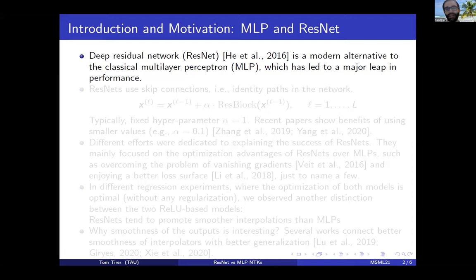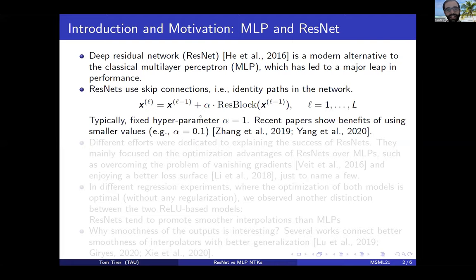My name is Tom Tierer, and I present my work with Joanne and Raja on kernel-based smoothness analysis of residual networks. We all know the huge performance leap obtained by deep residual networks — ResNets — compared to classical multilayer perceptrons. The key ingredient in ResNet is the skip connection: in each layer, the features are the sum of the previous layer's features plus a nonlinear residual block, scaled by a hyperparameter alpha.